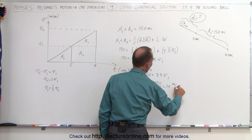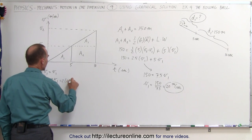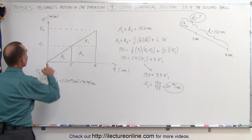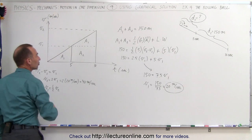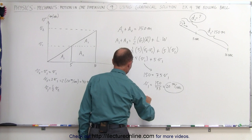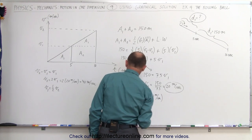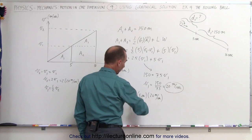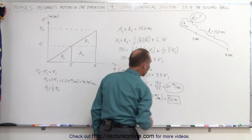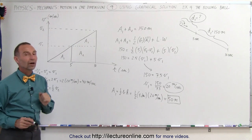Therefore V1 is equal to 150 divided by 7.5, which equals 20 meters per second. And if V1 equals 20 meters per second, then V2 is twice that — two times 20 — so V2 equals 40 meters per second. Now that we know V1, we can find Area 1: A1 equals one-half times the base of five seconds times the height V1 of 20 meters per second. The seconds cancel, giving one-half times 5 times 20, which is 50 meters — the distance covered during the first five seconds.